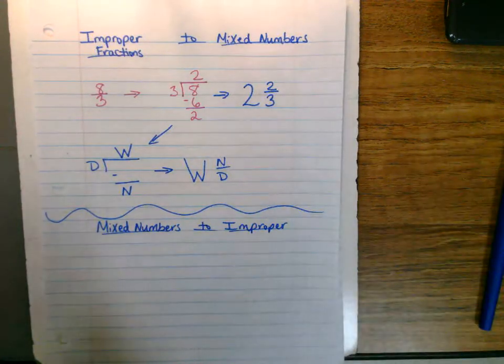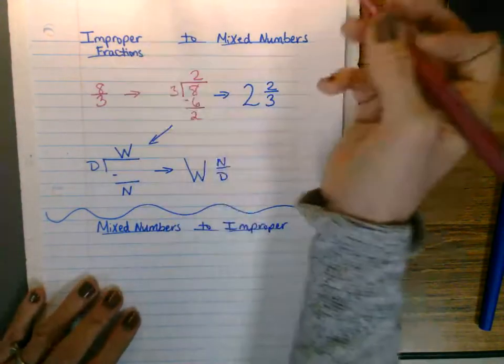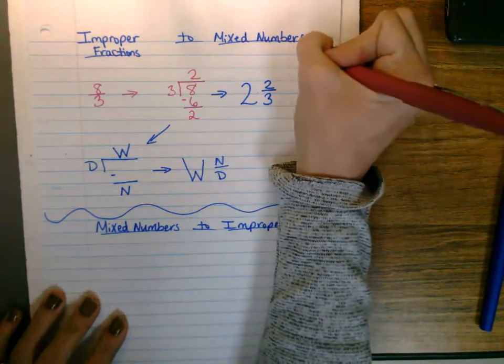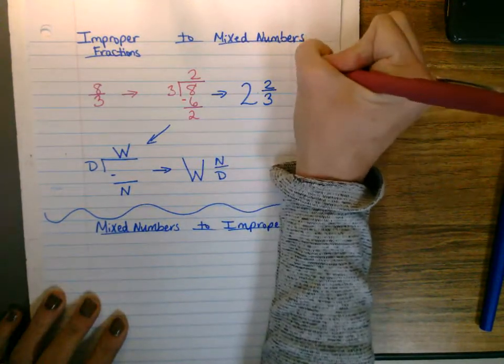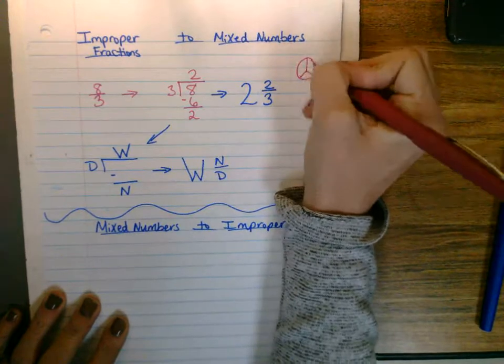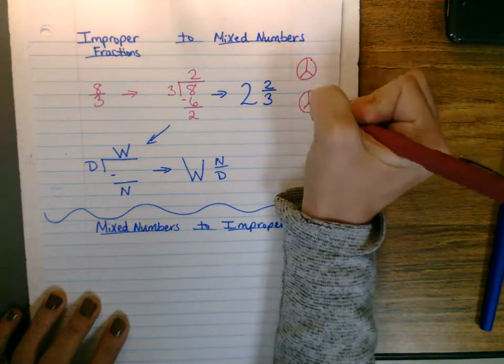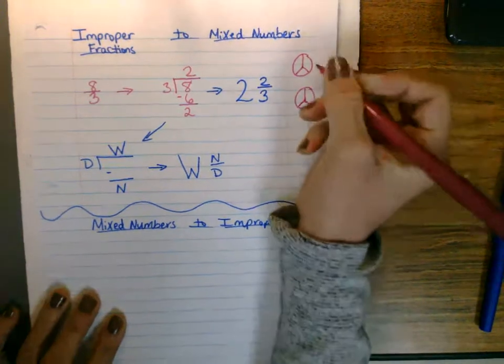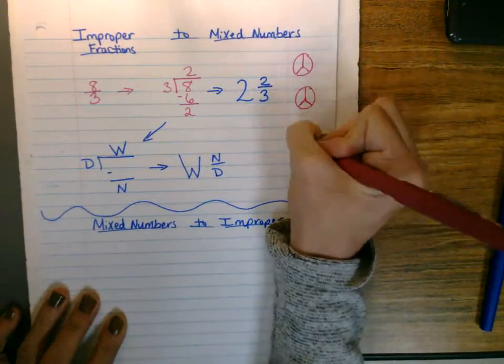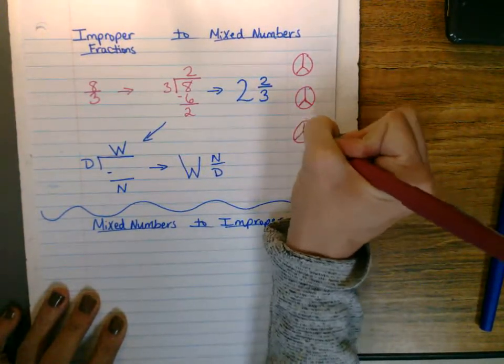And we also teach the kids to model this. So they know eight-thirds, everything would be, our holes would be cut into thirds, and that would be three, these aren't perfect, so don't judge my drawing, they're thirds, that's six slices, and then nine slices.